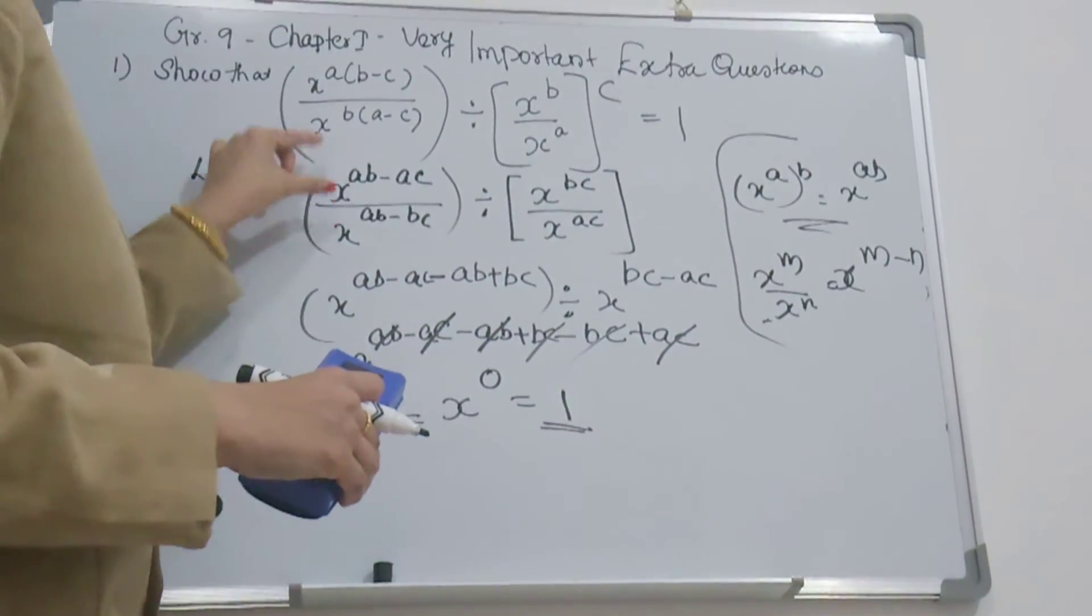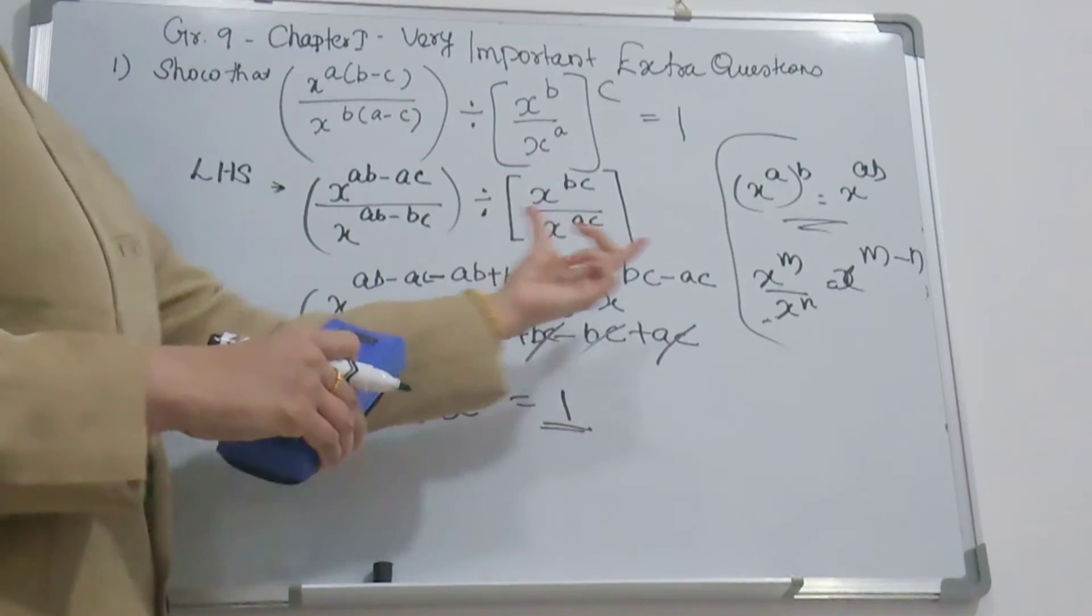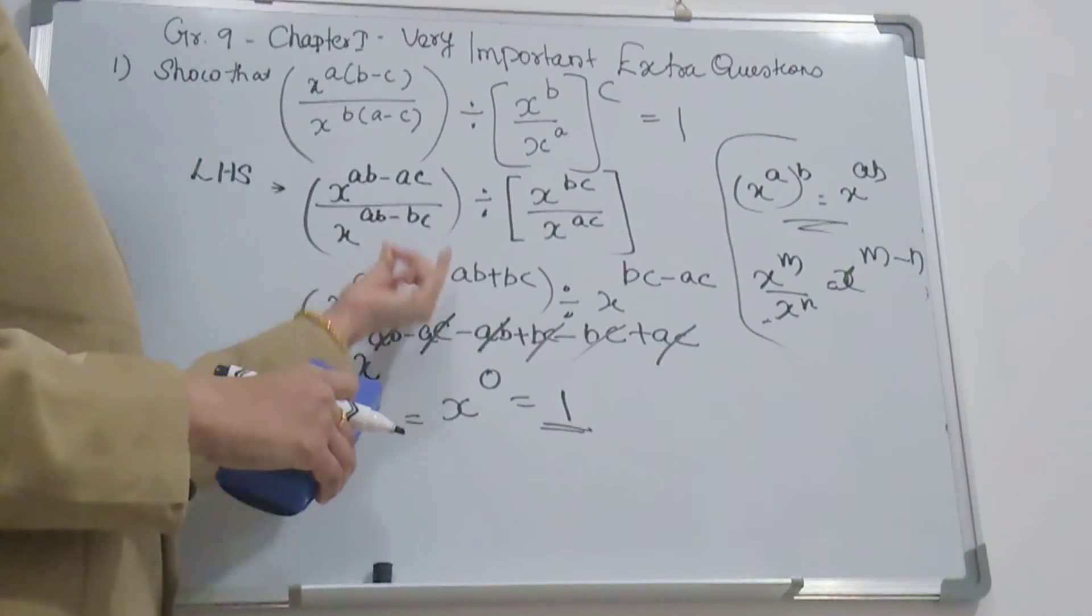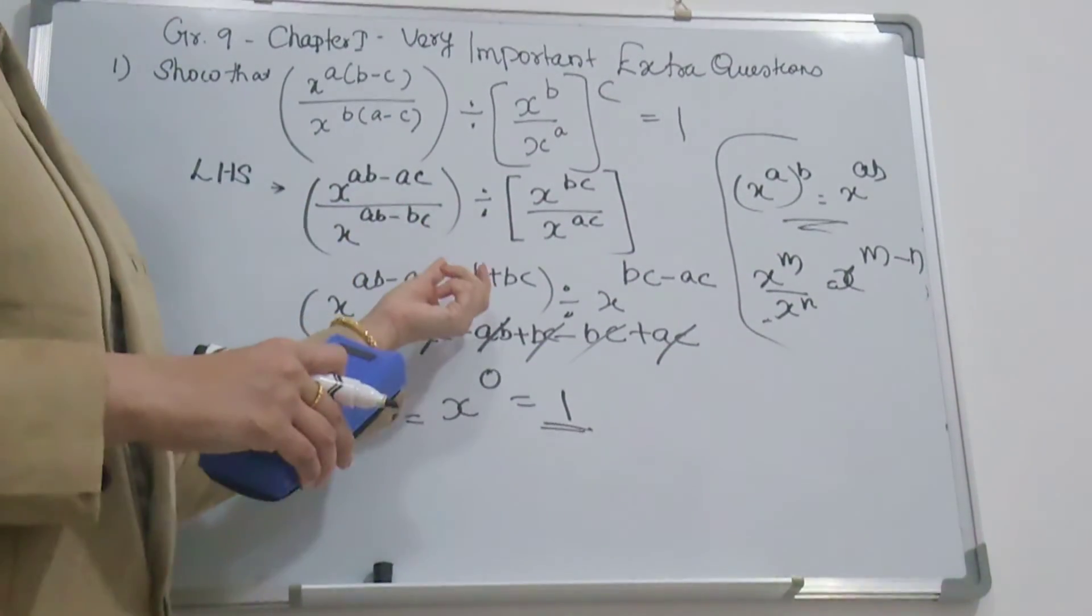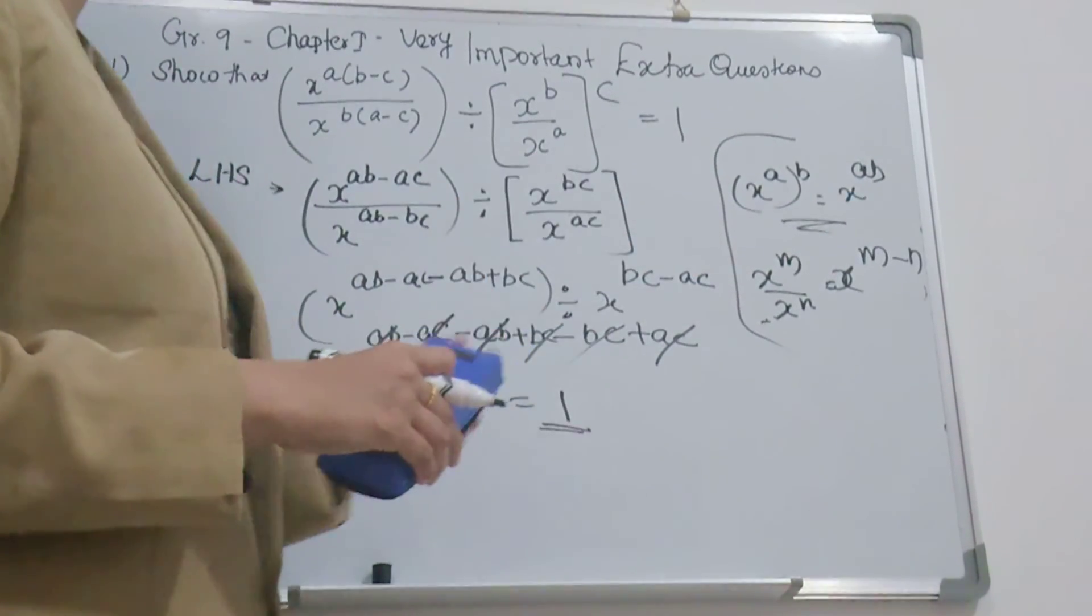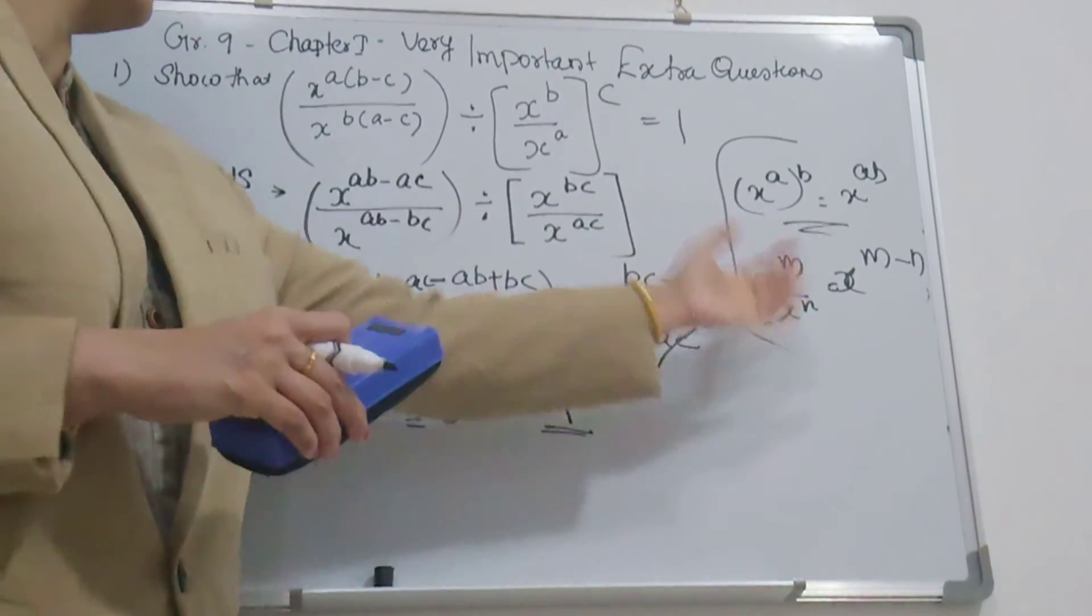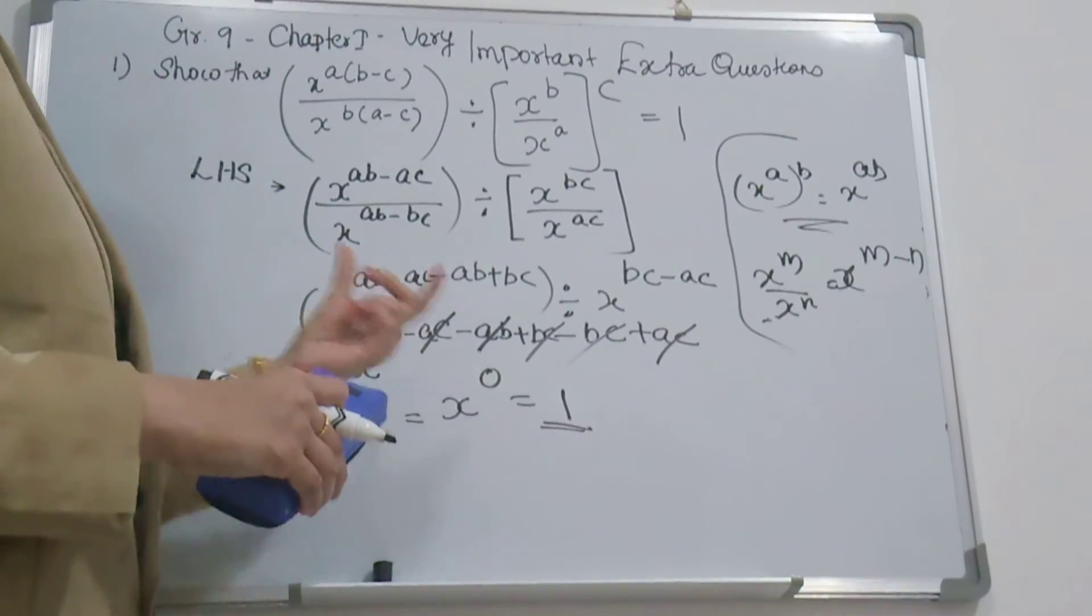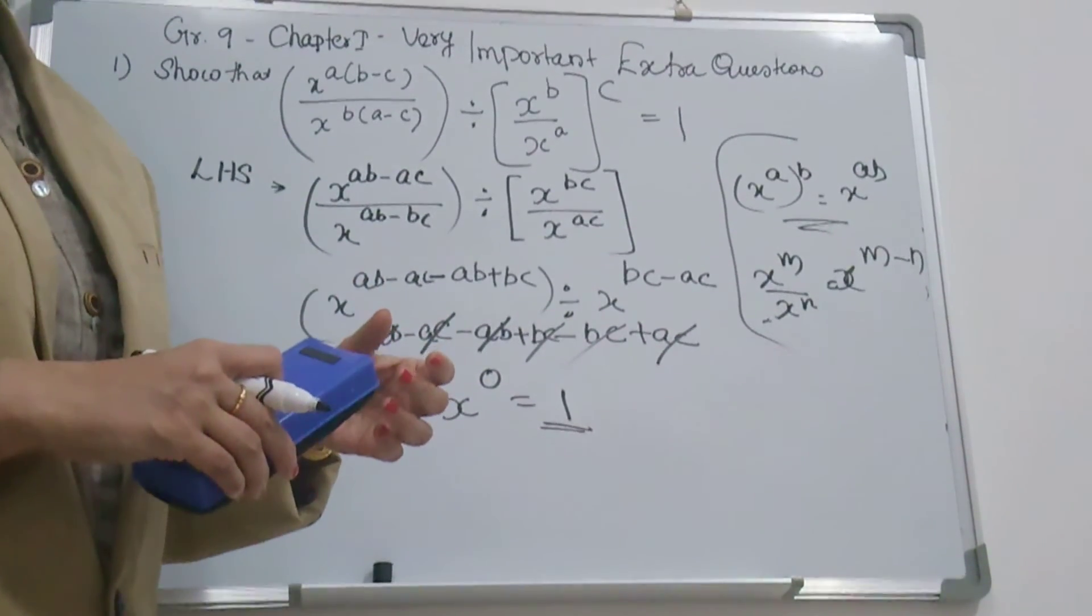What do you use? For this, you use x^m divided by x^n. Now, you use x^(ab - ac) minus (ab - bc)—removing the bracket—plus bc, divided by x^(bc - ac). We get x^0, and x^0 equals 1.